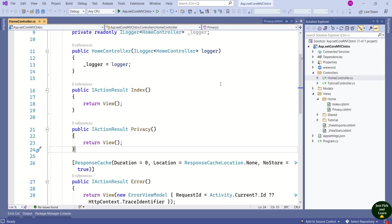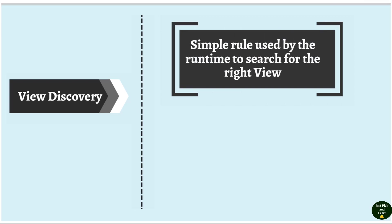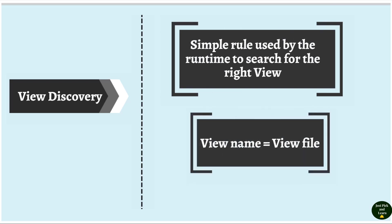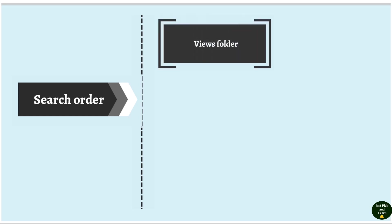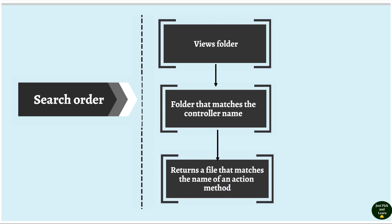We are talking about this return view method. Let's make it simpler. When the Index action method returns a view, behind the scenes a process called view discovery takes place. View discovery is not rocket science — it is a simple rule used by the runtime to search for the right view. The runtime decides that the view name and the view file name should match. The search starts from the Views folder, then it searches for the folder matching the controller name, and inside that folder it returns the file matching the action method name.